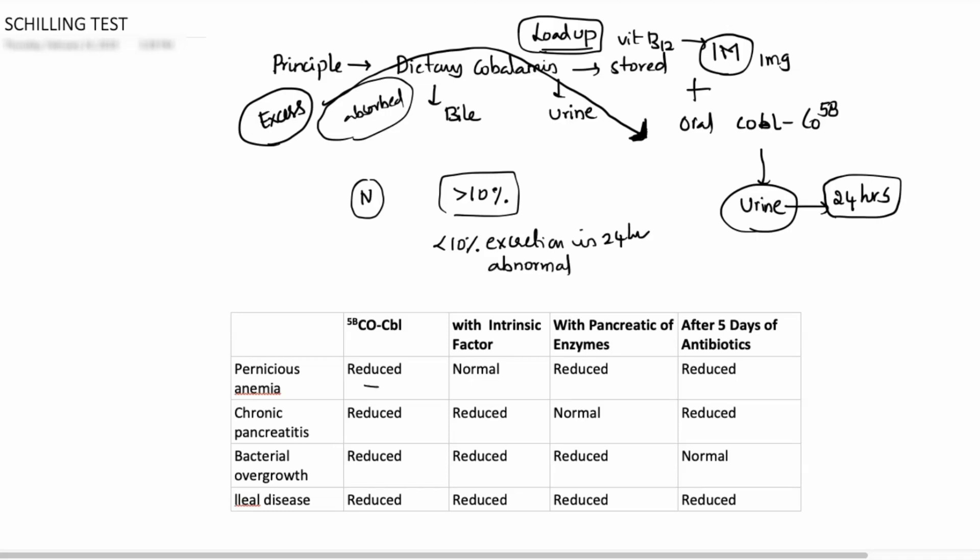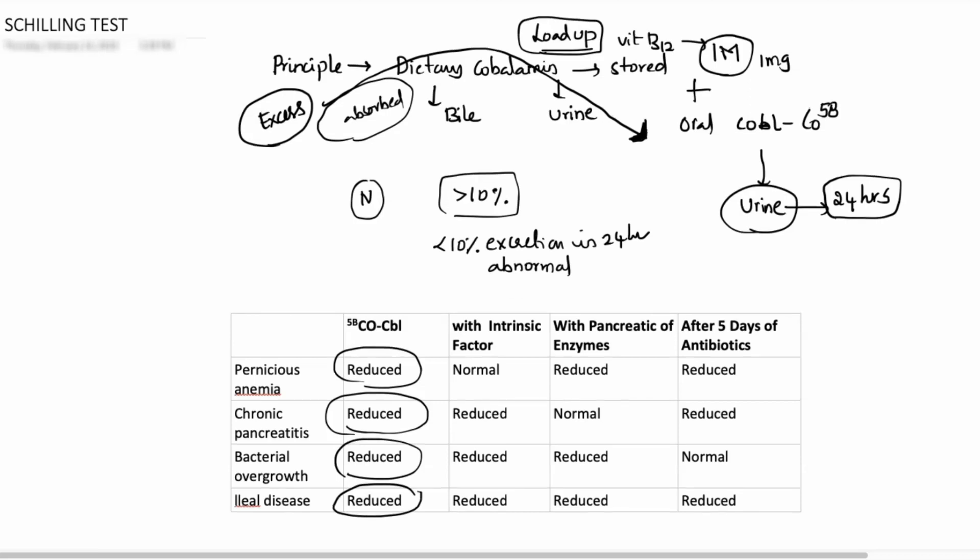So in the following diseases, when I say there is reduced level, it means they are excreting less than 10%. See in the four options, less than 10%. Now, once you know the reduced levels, the next experiment, after some time, we have to supplement the same oral and also IM cobalamin with intrinsic factor. In pernicious anemia, there is defect with intrinsic factor. And once you give intrinsic factor, the levels become normal. That is, now there is more than 10% excretion.